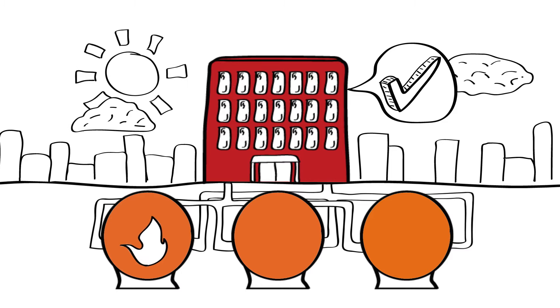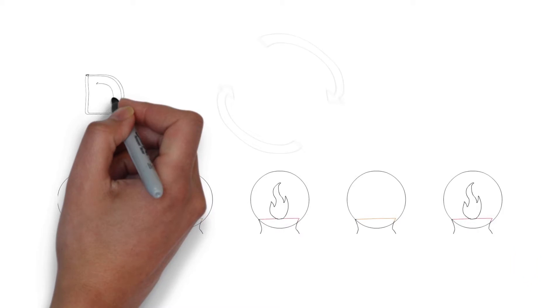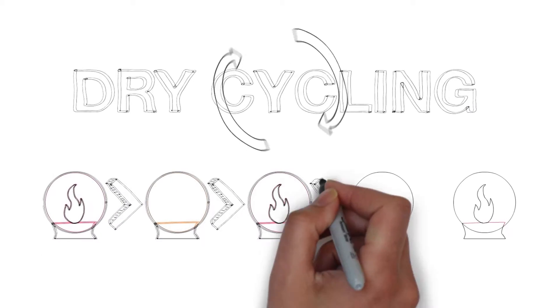As the boilers start to cool, they can fire again to keep hot even though there isn't a need for heat in the building. This is what's known as dry cycling.